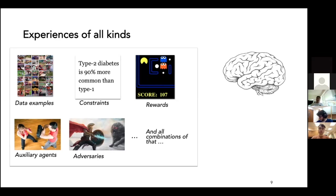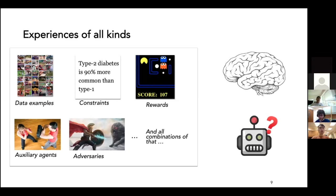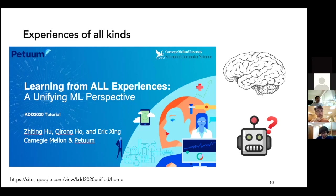But how about machines? So far we don't have any machine learning algorithm that can effectively make use of all these kinds of experiences at once to learn a skill, or to solve a problem. At KDD last year we gave a tutorial about this general topic — how can we enable machine learning by making use of all different types of experiences.